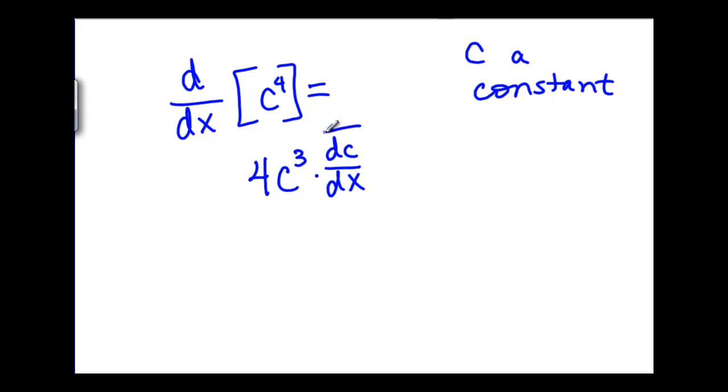Why are we getting this complicated expression? Well it turns out this complicated expression is actually just a fancy way of writing zero because saying dc/dx, how does c change as we change x? Well if we're saying c doesn't change as we change x, this number is exactly zero. Therefore we're looking at 4c^3 times zero which equals zero.